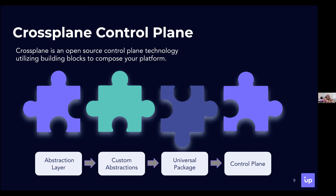The second building block is compositions — composable custom abstractions. This allows you to take everything from the cloud abstraction layer and define your own interfaces or APIs. For example, I could include provider AWS and create the concept of something generic like a bucket. That bucket on AWS might mean an S3 object, on Google it might mean something different, and on Azure something different as well. This ability to define custom abstractions, bundle them together, and compose them into higher-level concepts is a really powerful concept in Crossplane.